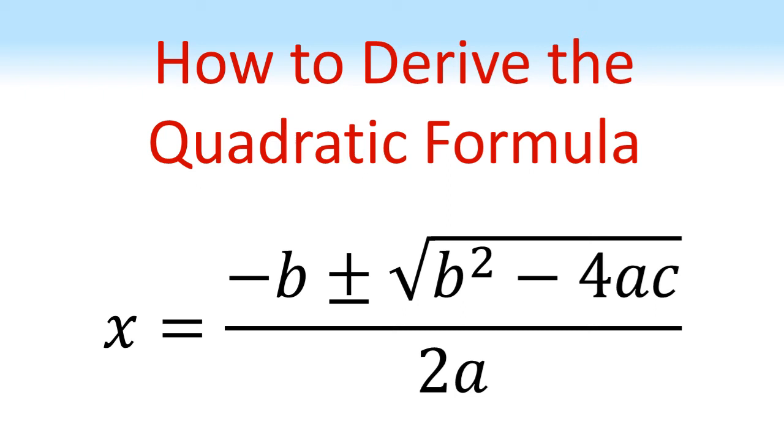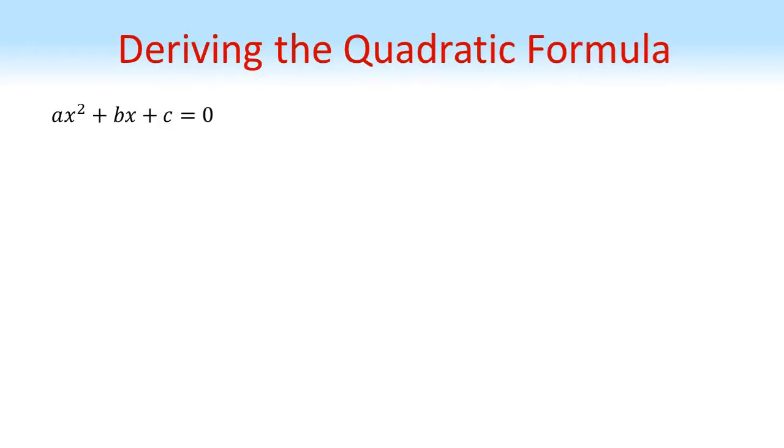How to derive the quadratic formula. Starting with a quadratic equation of the form ax squared plus bx plus c equals zero,